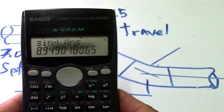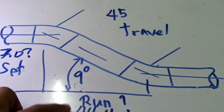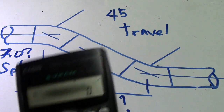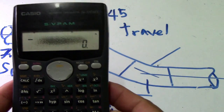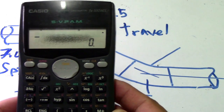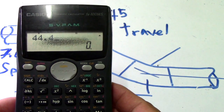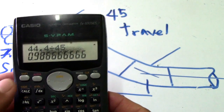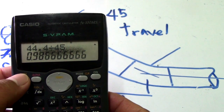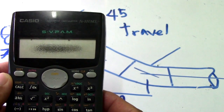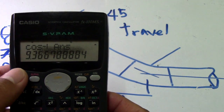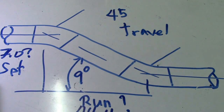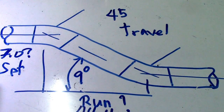Now we will use the run to verify again. Divide 44.4 by travel 45, then press shift and cosine (inverse cosine). The answer is 9 degrees. So both our set and run answers are confirmed correct.